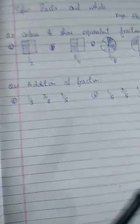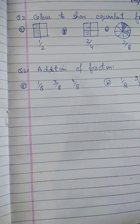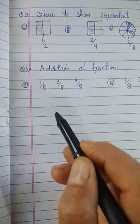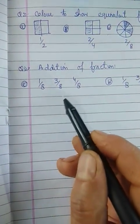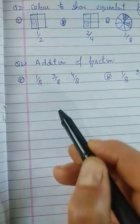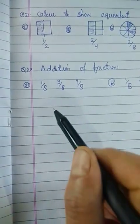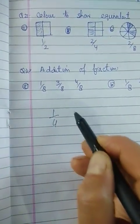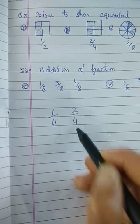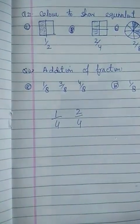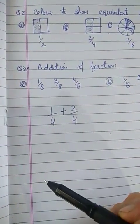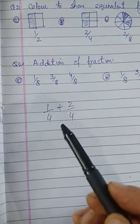Now we have shown equivalent fractions. Next, we have addition of fractions. Suppose we have two fractions and we have to add them. For example, 1 by 4 plus 2 by 4 - these are two fractions and we have to add them.